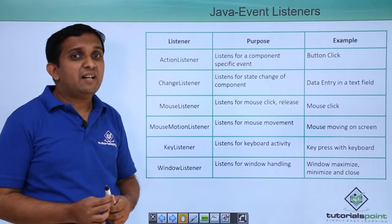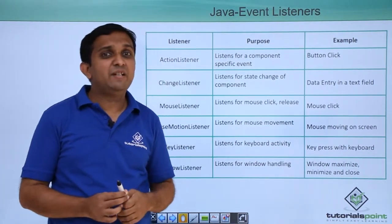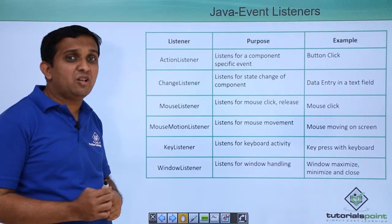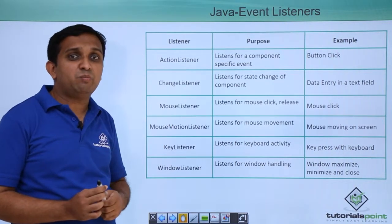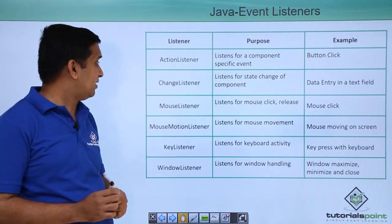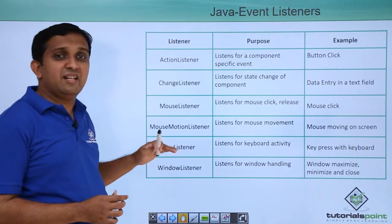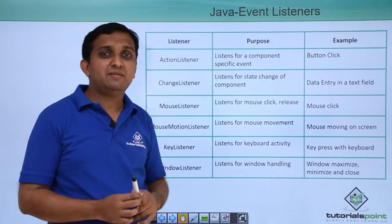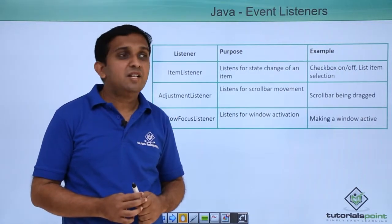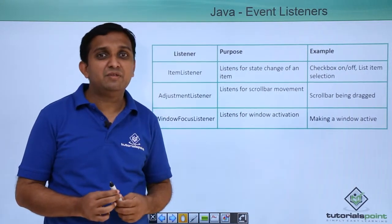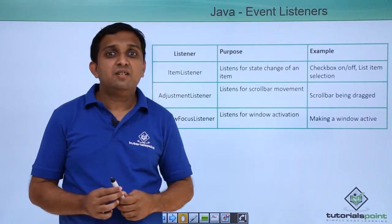There are different listeners in Java. ActionListener detects if you click on a button. ChangeListener detects if you change or resize a component or window. MouseListener listens to mouse movements, and MouseMotionListener is also there. KeyListener detects key presses. WindowListener, ItemListener, AdjustmentListener, and WindowFocusListener are also available. These listeners are used when implementing an application that handles various events.